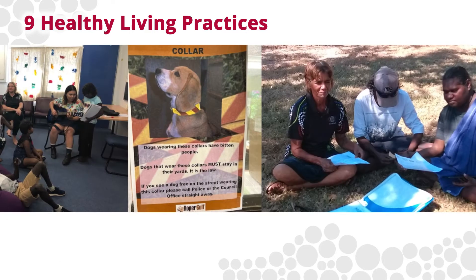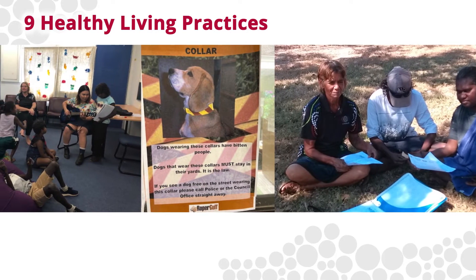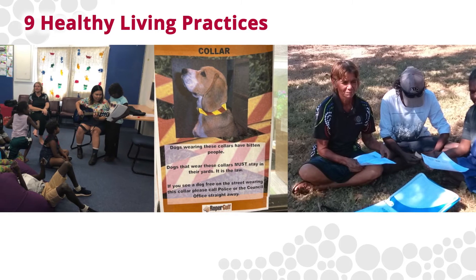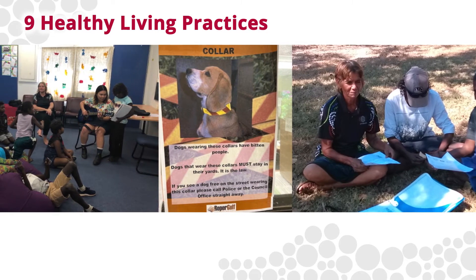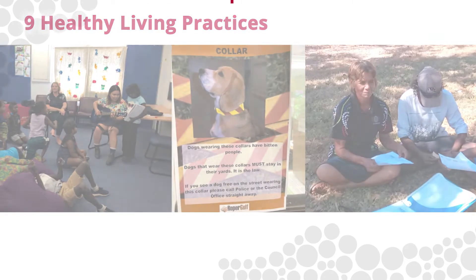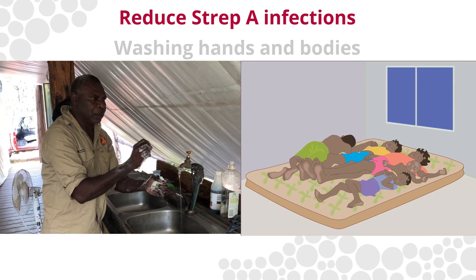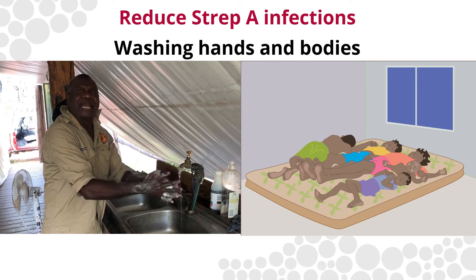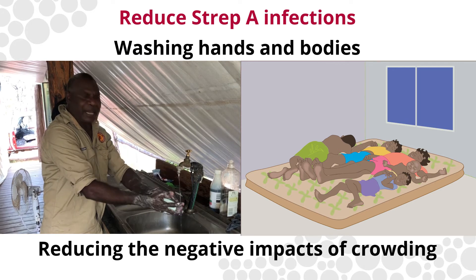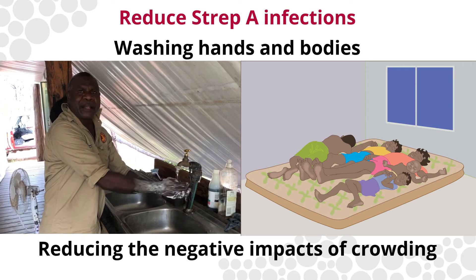While not all these practices apply directly to preventing Strep A infections, the approach to the social determinants of health should be holistic rather than disease specific. Evidence suggests that washing hands and bodies and reducing the negative impacts of crowding are directly associated with reducing Strep A infections.